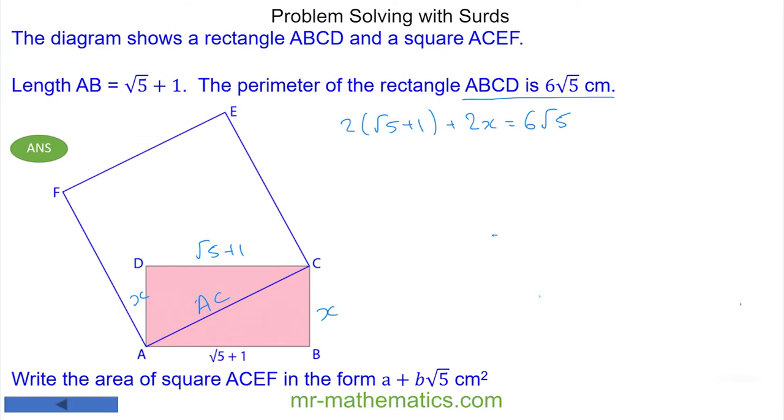So I'm going to make x the subject in this equation by taking away 2(√5 + 1) from both sides. These will cancel, so I'm left with 2x equals 6√5 minus—and I'm going to expand this bracket out—which is minus 2√5 and minus 2. So 2x equals 6√5 - 2√5, which is 4√5 - 2.